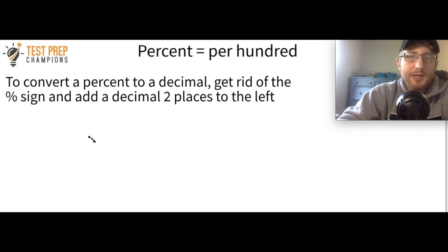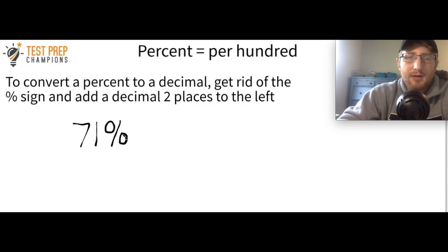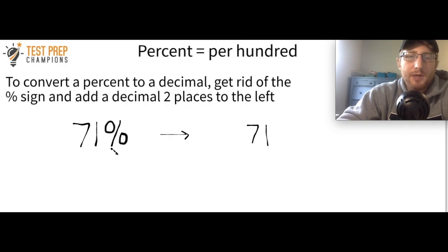To convert a percent to a decimal, all you want to do is get rid of that percent sign, and then put a decimal two places to the left. So let's say we have 71%. How would you convert 71% to a decimal? Pause the video and try this out. What I want to do is get rid of that percent sign and put a decimal two places to the left. If my percent sign was right here, I get rid of it and go two to the left — here's one, here's two — and that's where my decimal would go.